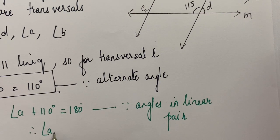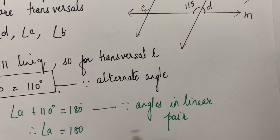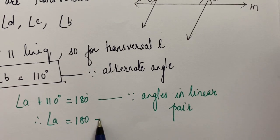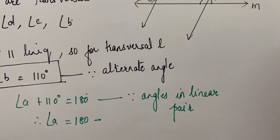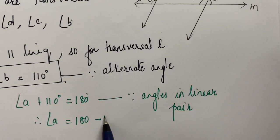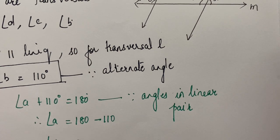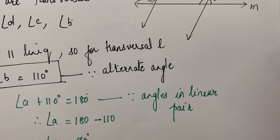Therefore, angle A will be 180° minus 110°, which gives angle A equal to 70 degrees.